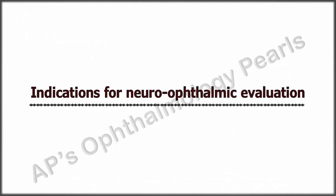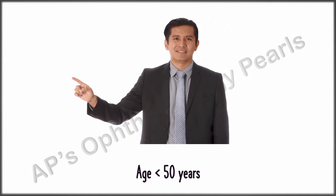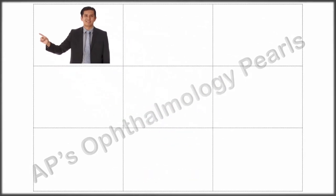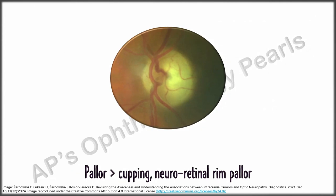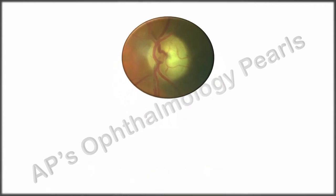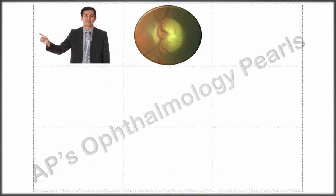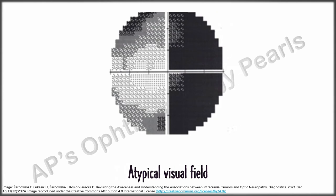Indications for further neuro-ophthalmic evaluation include: age less than 50 years; pallor greater than cupping; neuroretinal rim pallor; absence of parapapillary atrophy (noting that focal rim loss is generally characteristic of true glaucoma); and atypical visual fields, or when visual field defects respect the vertical midline — glaucomatous fields respect the horizontal midline, while compressive lesions respect the vertical midline.